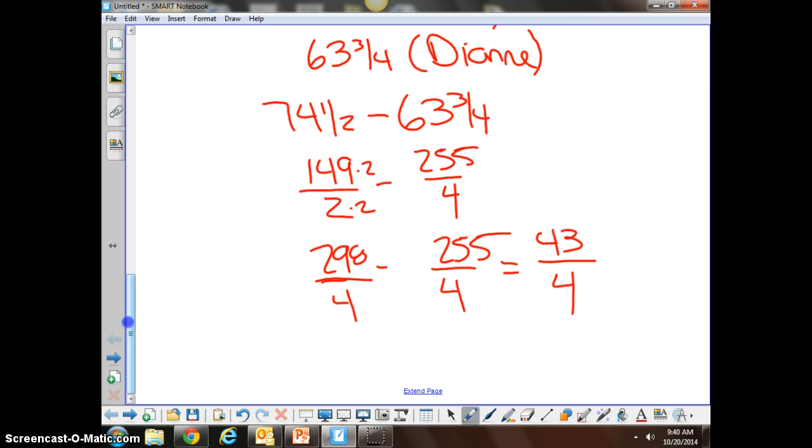43/4ths is not an appropriate answer since it is an improper fraction, so we must convert it into a mixed. 4 goes into 43 ten times with 3/4ths left over. Our final answer is Jack is 10 and 3/4ths inches taller than Diane. Good luck!